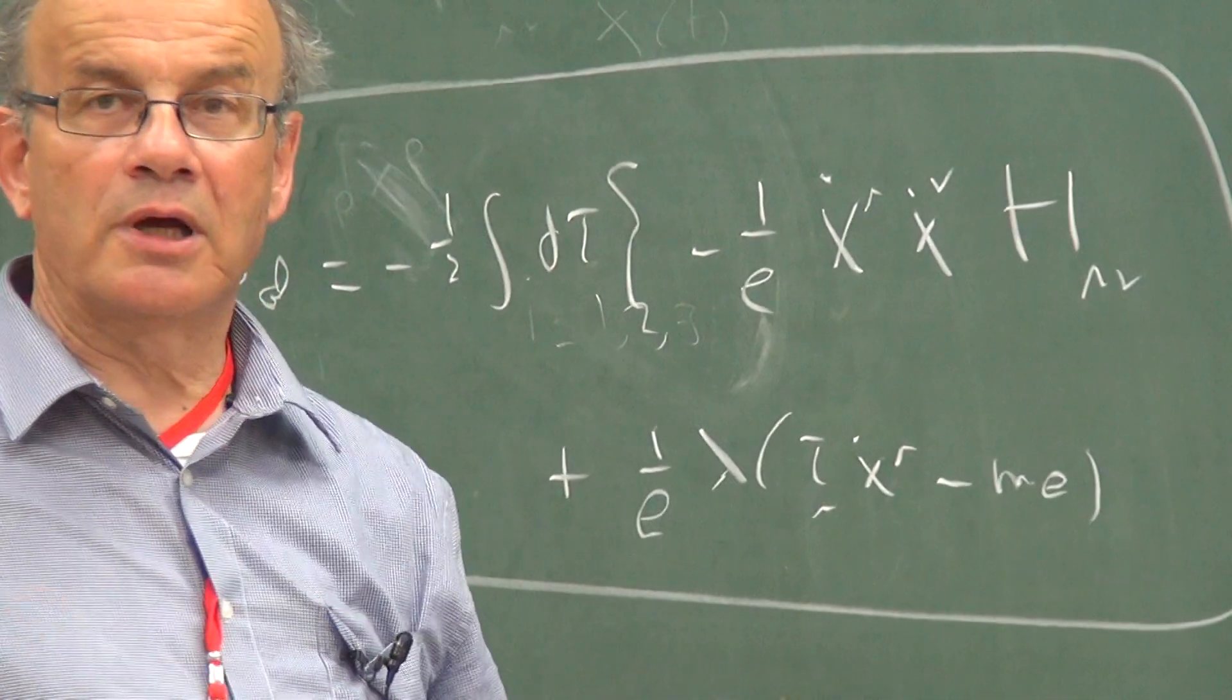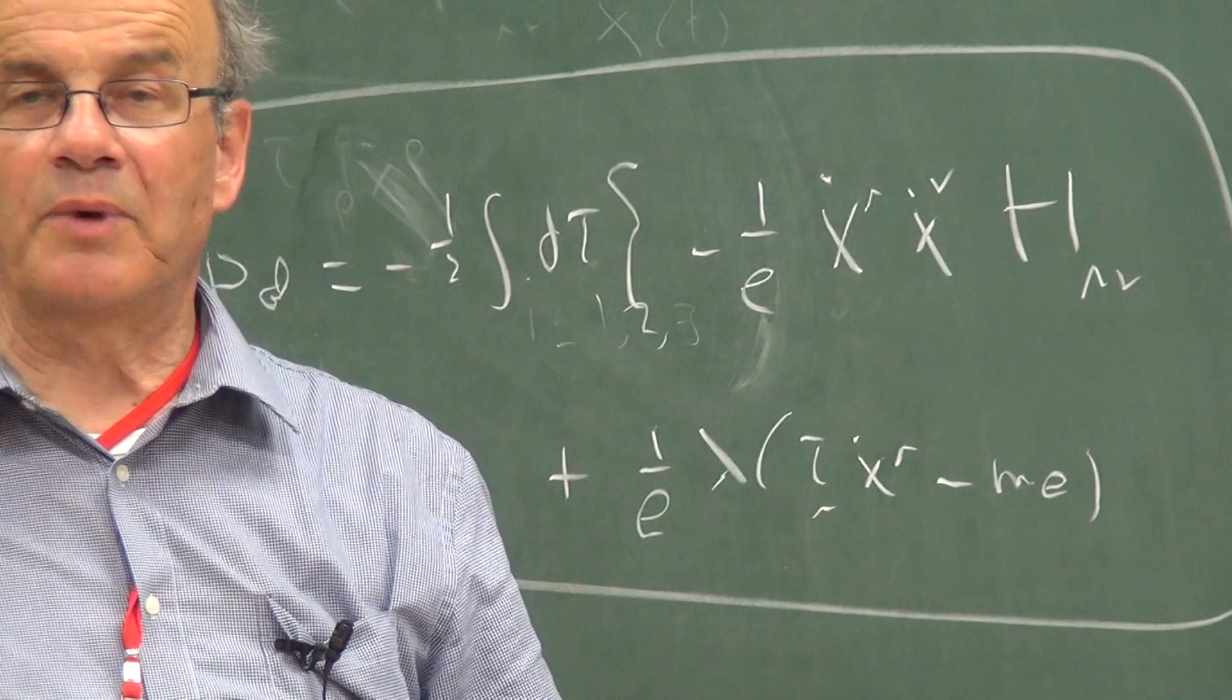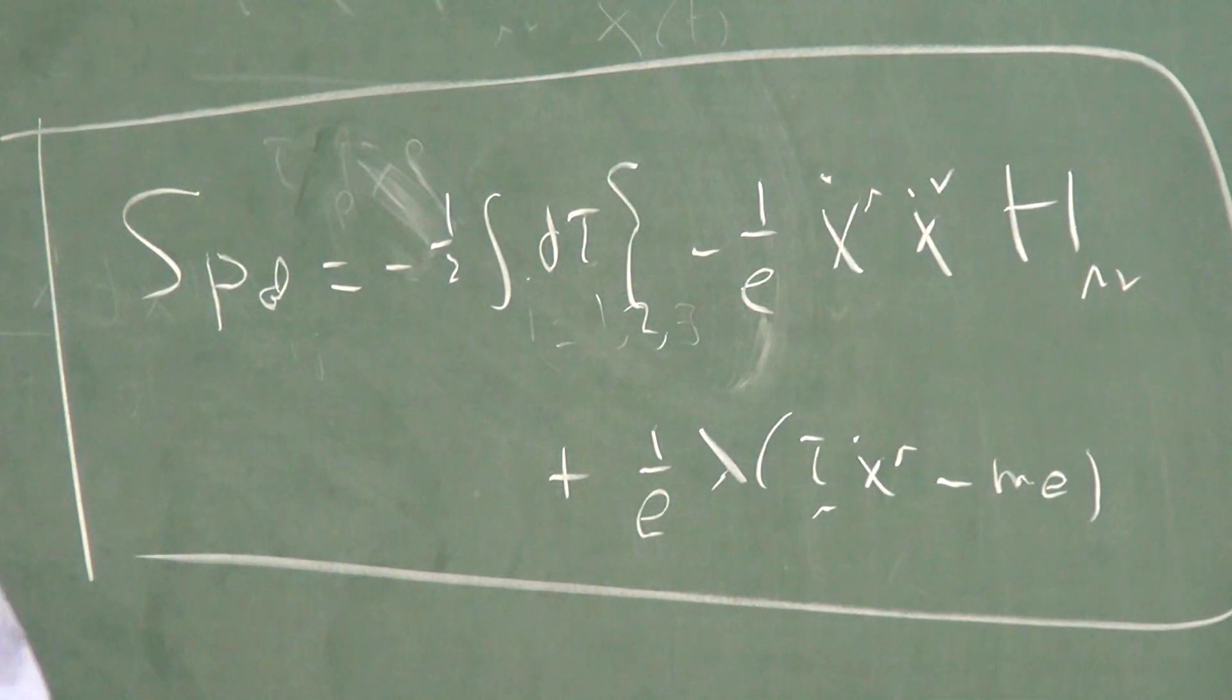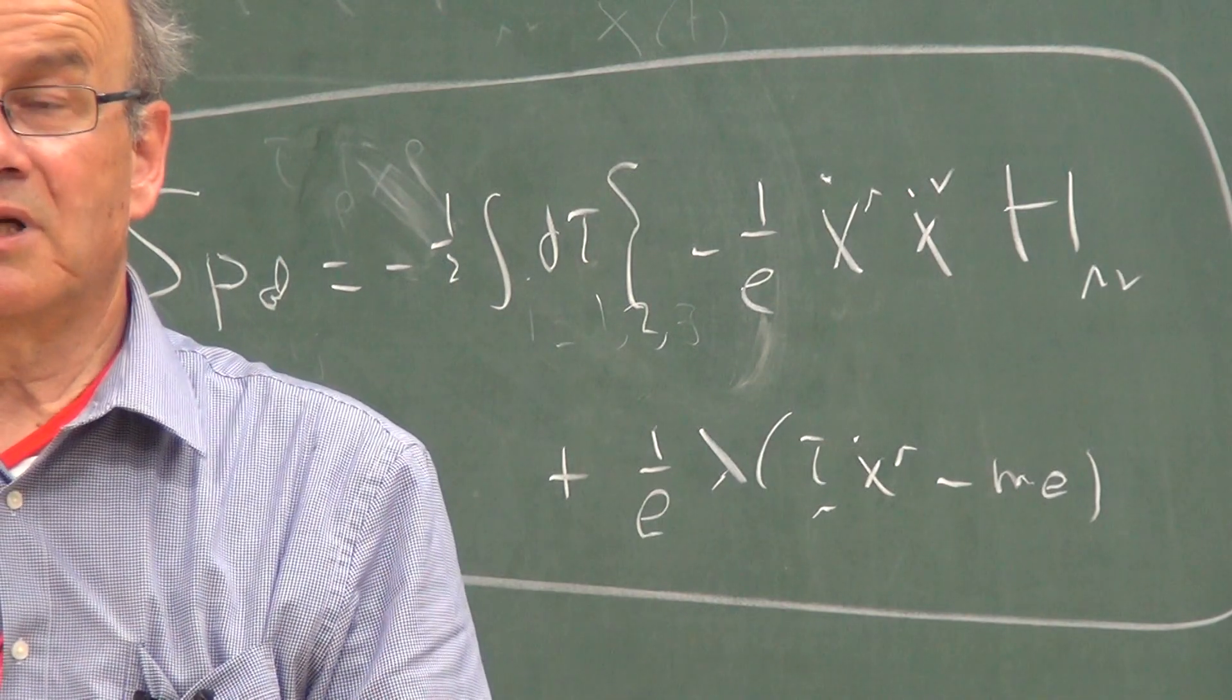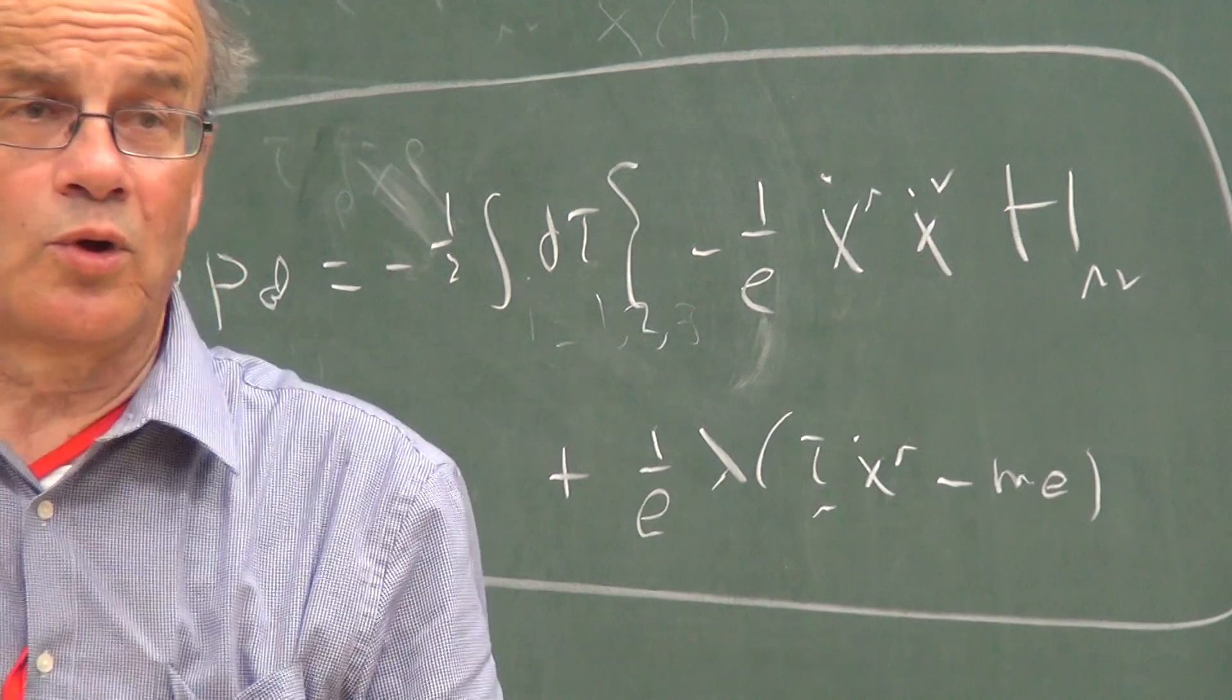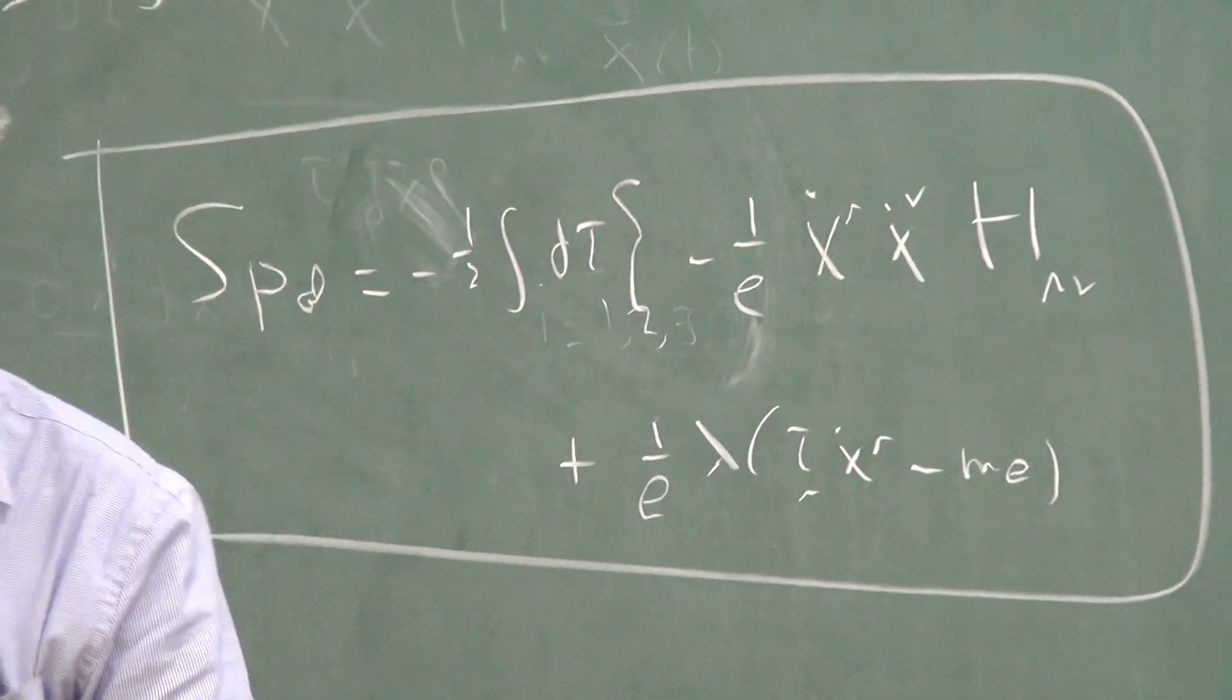and then I will discuss what happens in the case of strings, and how we can use this information to derive the non-abelian Buscher rules, so the non-tifocal T-duality rules, and there we'll see some surprises, some things which are not expected. It's exactly 4 o'clock, so I think I'll stop on that. Thank you very much. Thank you very much.